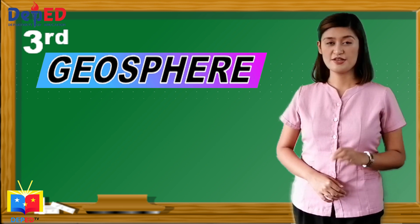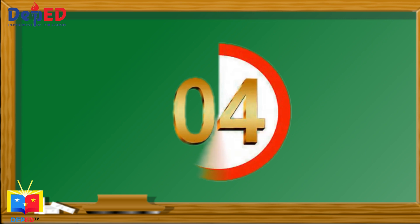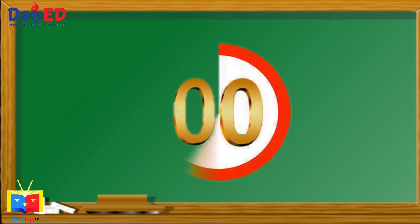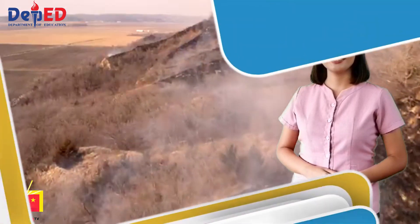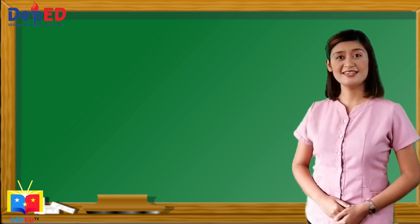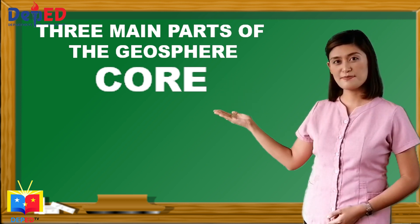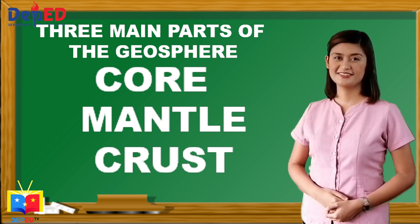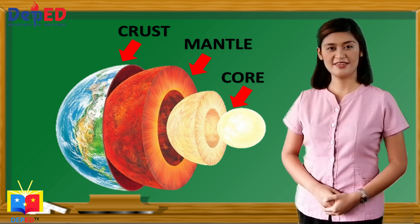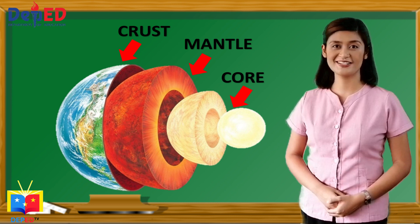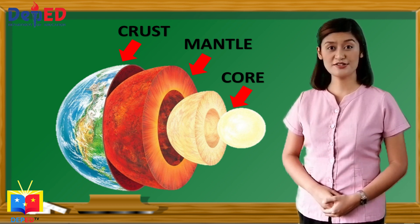The third subsystem is the geosphere, which is the solid part of the Earth. The geosphere lies beneath both the atmosphere and the ocean. Because the geosphere is not uniform, it is divided into three main parts based on differences in composition: the core, the mantle, and the crust. The dense inner sphere is the core, the less dense is the mantle, and the lighter thin part is the crust, which is not uniform in thickness — thinnest beneath the oceans and thickest beneath the continents.